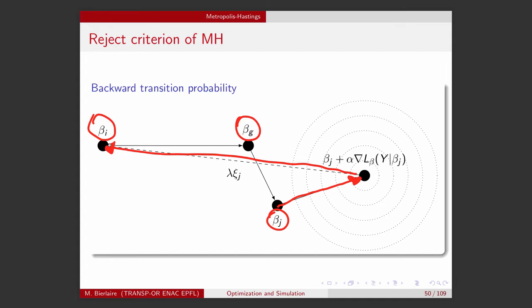So basically, the probability that I go to beta_i is the probability that my random walk generates a vector that is linking this point, beta_j plus alpha times the gradient, and this point, beta_i, if I make a step of length lambda along it.